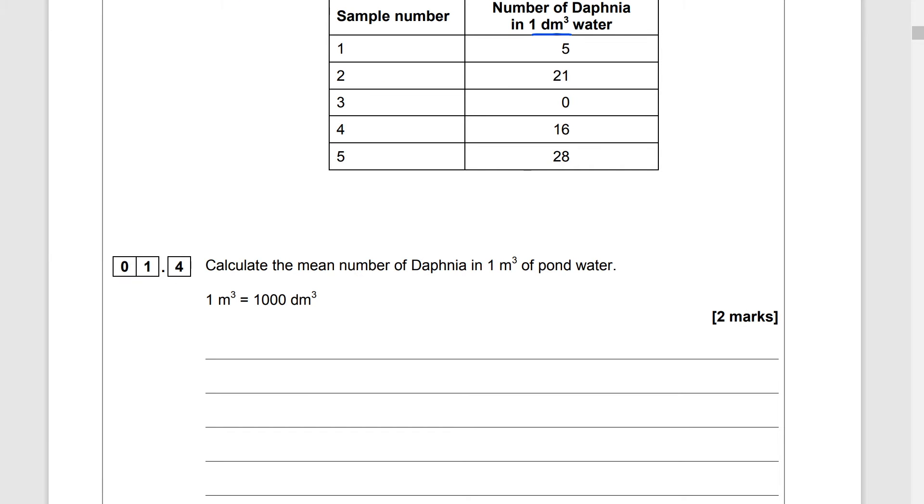Calculate the mean number of Daphnia in one metre cubed of pond water. One metre cubed is equal to a thousand decimetres cubed. There are probably a couple of different ways you can do this and get to the same answer. This is the way I'm going to do it. So I'm going to add up the Daphnia in all of those samples which comes to a total of 70. So there are 70 Daphnia in one decimetre cubed of water. So then I know that one metre cubed is a thousand decimetre cubed.